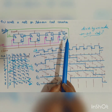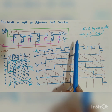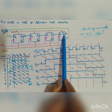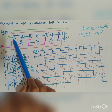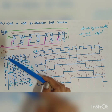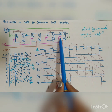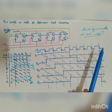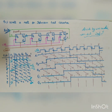This is the working principle of the Johnson Tail Counter. It is similar to the ring counter, but the key difference is that in the ring counter Q0 is fed back as input, whereas in the Johnson Tail Counter Q0 bar is taken as the input. It counts from 0 to 7, giving 8 different states for a 4-bit counter, which is why it is also called the divide-by-2N counter — an N-bit counter gives 2N counts.